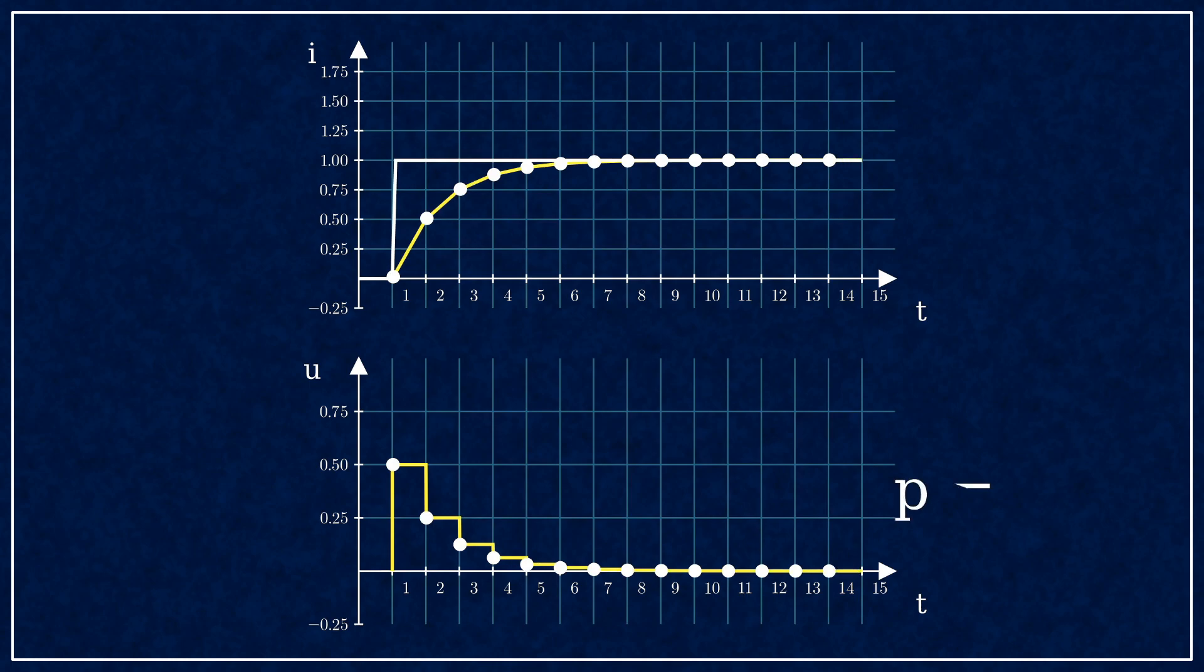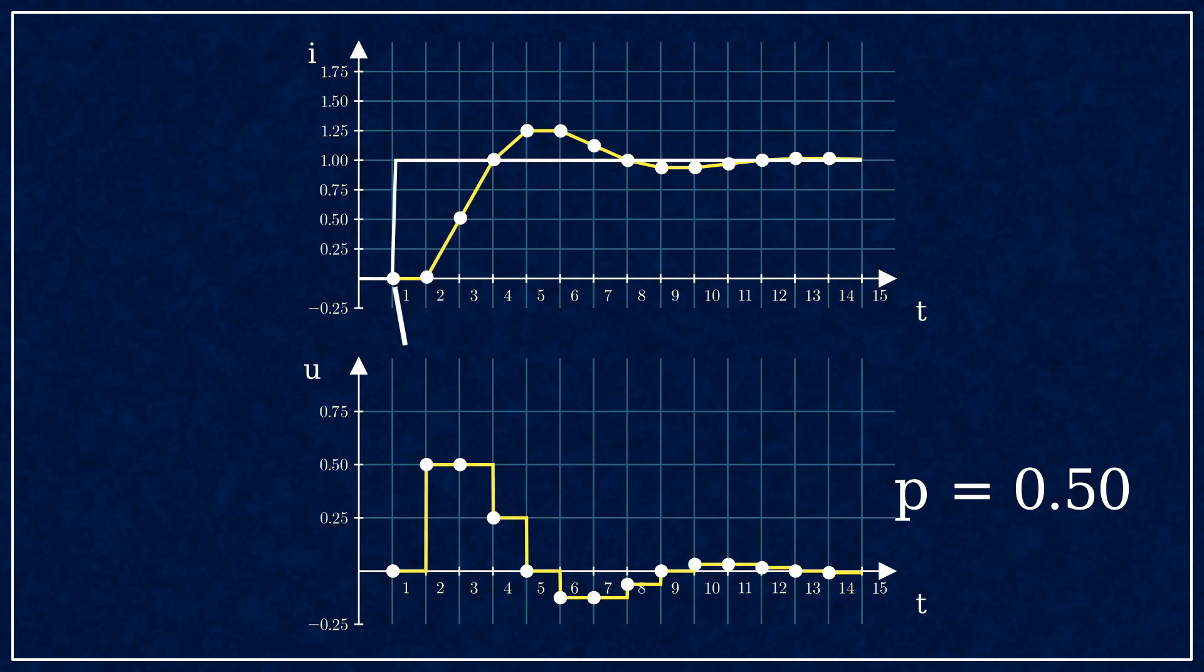This is how the step response looks like with no delay, and with delay. You can see how the error affects the output only the next cycle, and this causes an overshoot and oscillation.